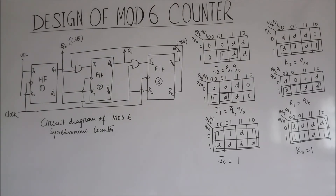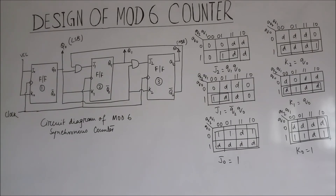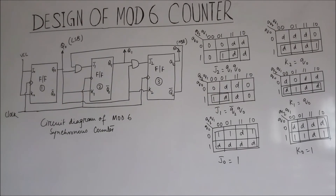This is the circuit diagram of the mod 6 synchronous counter. JK flip-flops are used. From the design we obtain J0 and K0 both equal to 1.